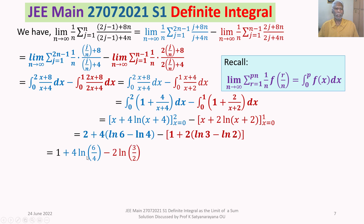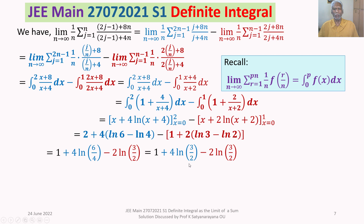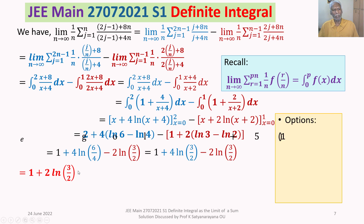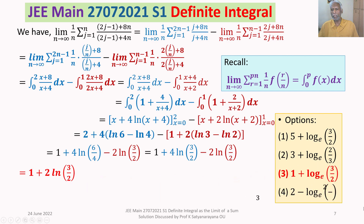Combining: 2 + 4·ln(6/4) − [1 + 2·ln(3/2)] = 2 + 4·ln(3/2) − 1 − 2·ln(3/2) = 1 + 2·ln(3/2). The final answer is 1 + 2·ln(3/2), which matches Option 3. Therefore our answer is Option 3.